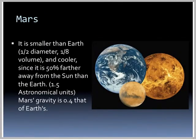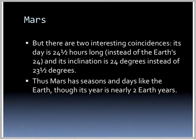That leaves us to the last terrestrial planet, Mars. It's smaller than Earth — half the diameter, an eighth of the volume — and cooler since it's 50% further from the Sun. Mars's gravity is 0.4 that of Earth's, so our 180-pound person would weigh 72 pounds on Mars. Interestingly, its day is 24 and a half hours long and its axial inclination is 24 degrees, very similar to Earth's 24 hours and 23.5 degrees. So Mars has seasons and days like Earth, although its year is nearly two Earth years, giving it six-month-long seasons.